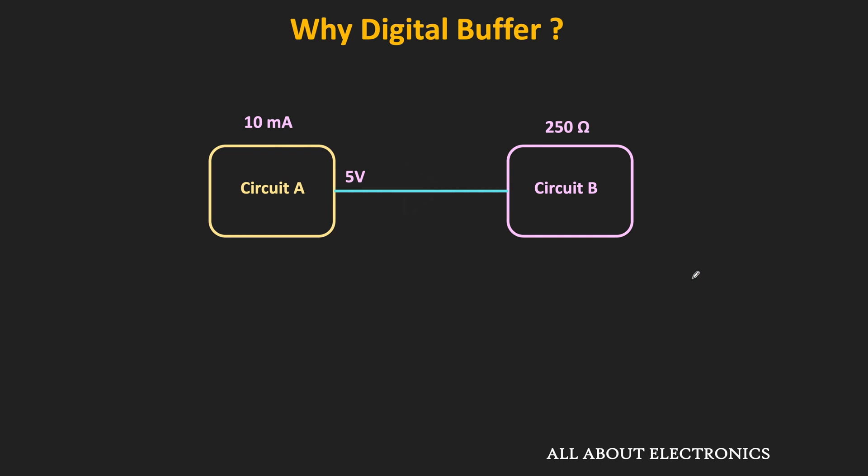But if we just connect the buffer between the two circuits, then this can be avoided. This digital buffer provides very high input impedance. That means when we connect the output of circuit A to the input of this buffer, the buffer draws almost no current. And at the same time, it also has very high current driving capability — let's say it can source a current up to 50 mA. So in this case, it can easily drive circuit B which has the input impedance of 250 Ohm. That is the advantage of the buffer.